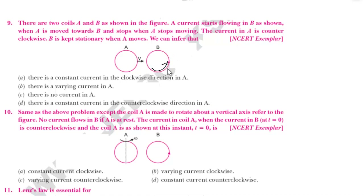Current is moving in this direction — this is the direction of current in B. When A is moved towards B and stops, the current in A is counterclockwise. B is kept stationary when A is moving. The options include: constant current clockwise in A, varying current in A, no current in A, or constant current counterclockwise in A. It's not in the clockwise direction.